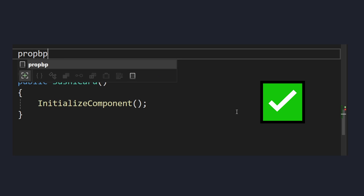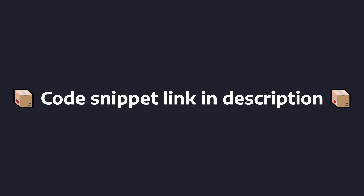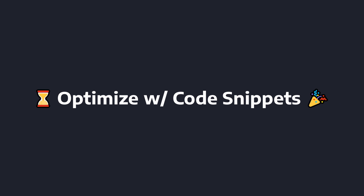Now it is much easier to scaffold bindable properties for .NET MAUI. There may be a download link to this bindable property snippet in the description if you want to use it in your own application. Hopefully you can create and leverage code snippets in other ways to speed up your development.